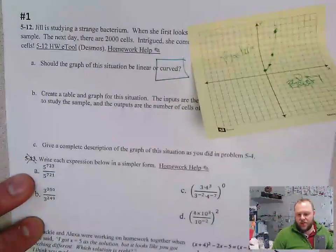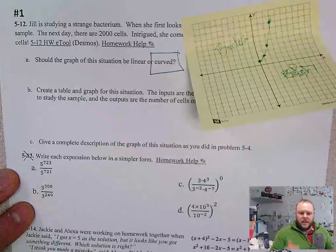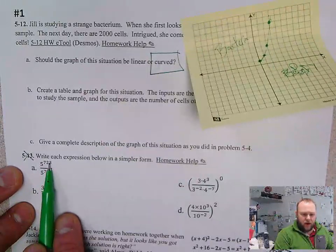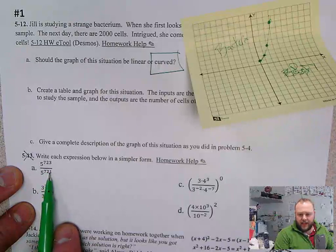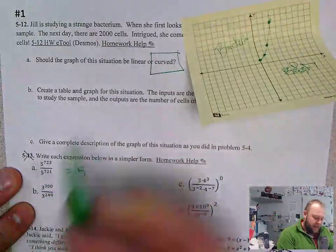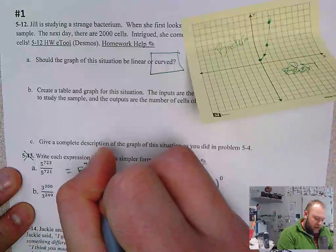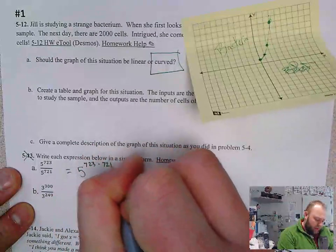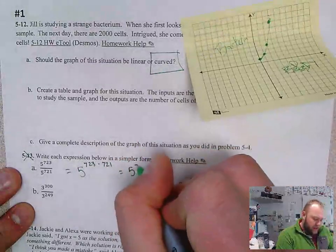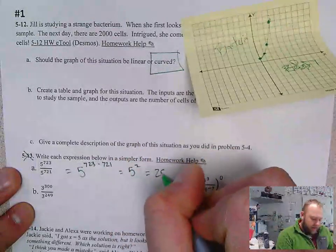We do need to use our exponent rules to solve these. This exponent rule remembers the quotient rule, whatever the numerator is, we subtract that exponent from the denominator. So it would look like this. When we have the same basis, 5 to the 723rd minus 721 power. 723 minus 721 is second power. So our answer is 25.